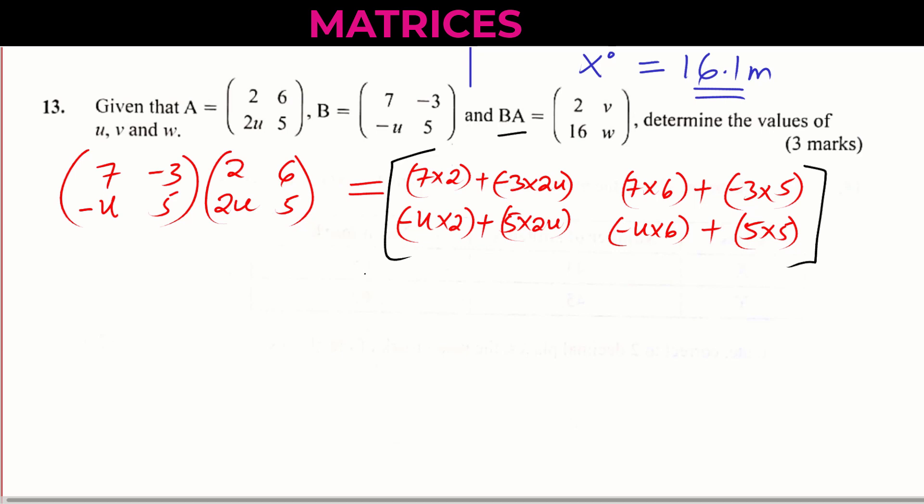Now we can simplify these. And when you simplify these, you will get 7 times 2 plus negative 3 times U, this will be 14 minus 6U. Then 7 times 6 plus negative 3 times 5, you get 42 minus 15. This will give 27.